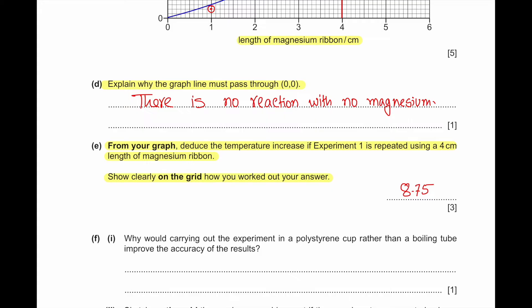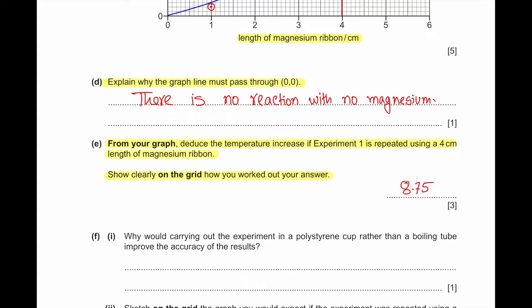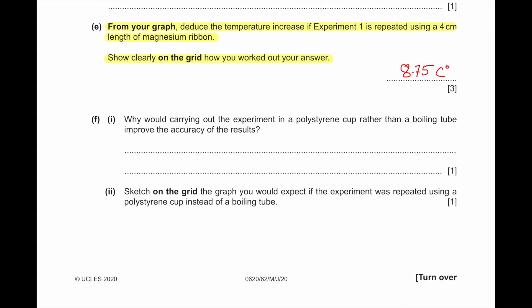Part F1: Why would carrying out the experiment in a polystyrene cup rather than a boiling tube improve the accuracy of the result? Polystyrene cup is a better insulator, so it will prevent heat loss to the surroundings.